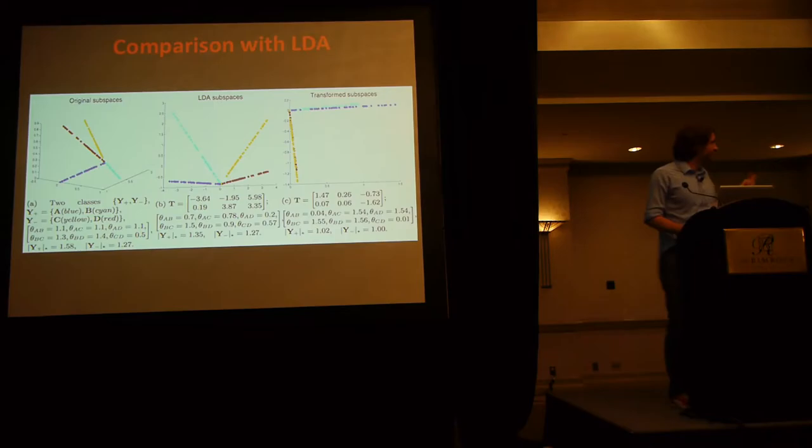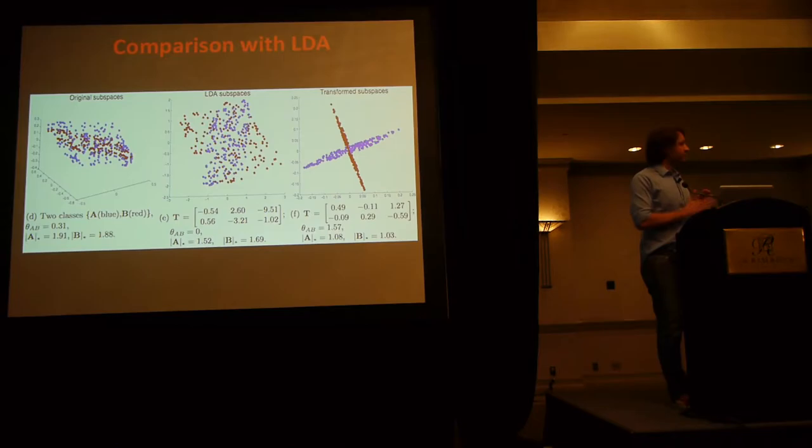What would happen is that their transformation would collapse the classes and make them orthogonal, whereas LDA makes them separable linearly and in a lower dimensional space, but does not enjoy this property. Another case would be the planes that I mentioned before, and what's happening here is that LDA does not give a good representation, whereas the transformation that they propose makes the subspaces perpendicular to each other, and are very easy to classify using some type of subspace model.